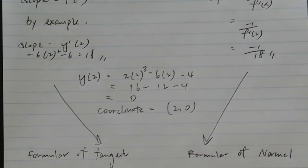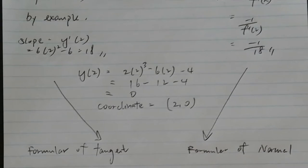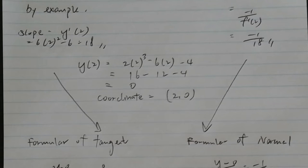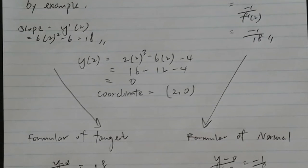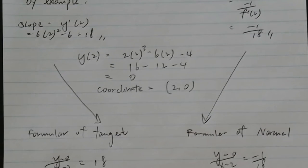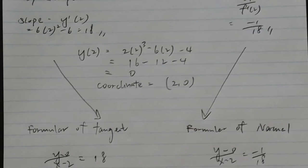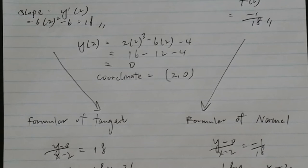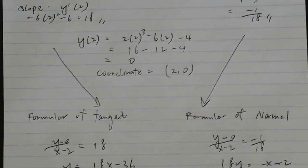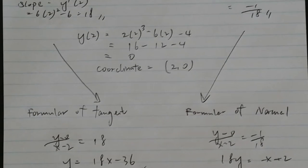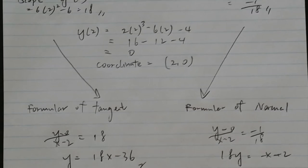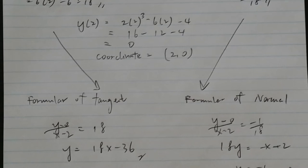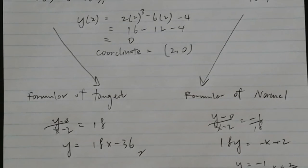After that, we have to find out the formula of tangent and formula of normal. Just like we do the, how to find out the formula of the coordinate. y minus 0 divided by x minus 2 equals to 18 is the formula for tangent. And I find out that it is y equals to 18x minus 36. This is the formula of tangent.